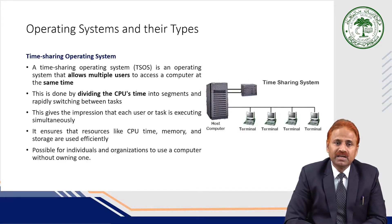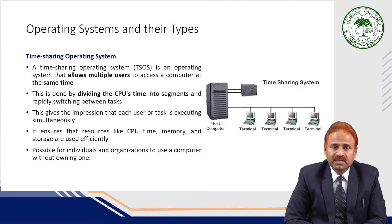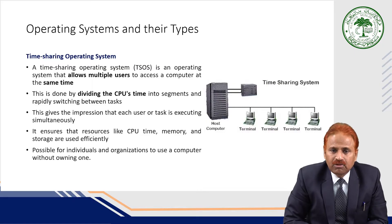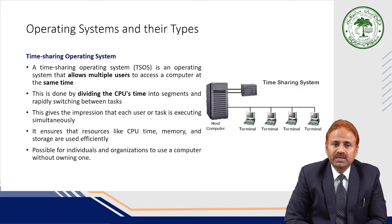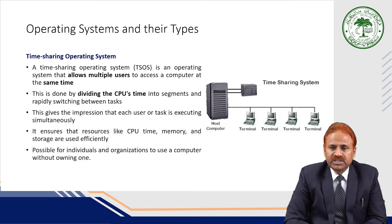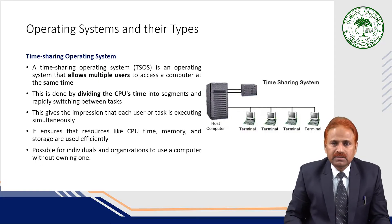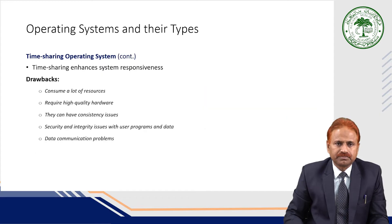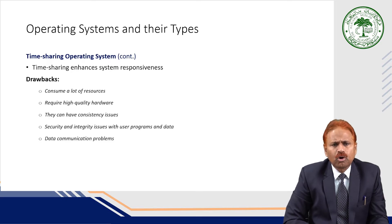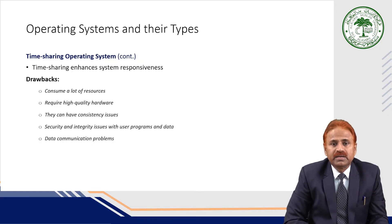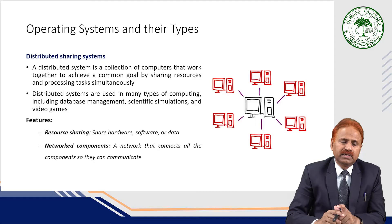The time sharing system gives the impression that each user's task is executing simultaneously. It ensures that resources like CPU time, memory, and storage are used efficiently. The system rapidly switches CPU time between terminals 1, 2, 3, and 4, executing all jobs simultaneously. However, there are drawbacks: it consumes a lot of resources, requires high quality hardware, and can have consistency issues, security and integrity issues, and data communication problems.